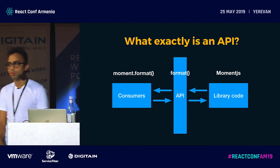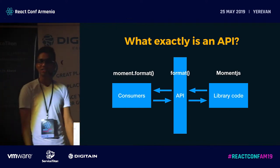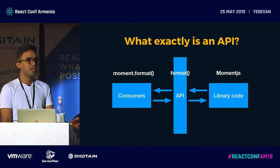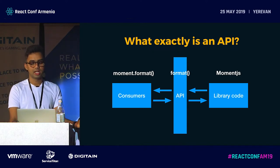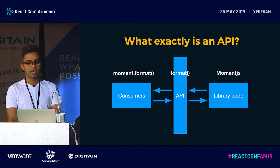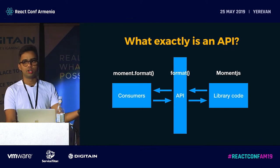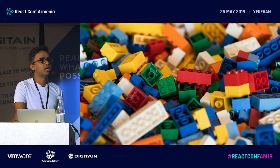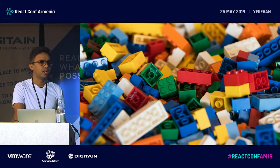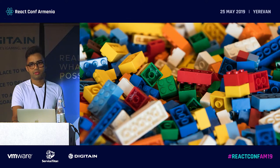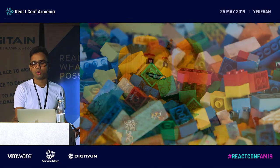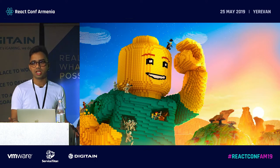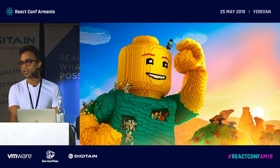For example, moment.js — how many of you have used moment.js? And we all decided not to use it after a while. The dot-format method is an API: it takes an argument telling it what kind of time format you need and gives the output. So moment.js is the library, the consumer uses moment.format, and the API is the format method. As a developer, APIs and libraries are like Lego blocks — you link them together to make your own product.